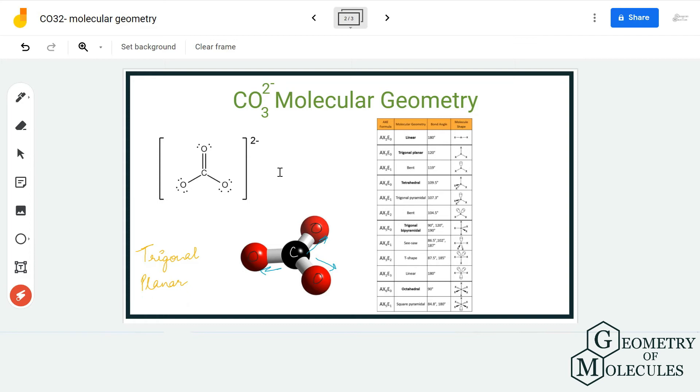To confirm it further, we are going to use the AXN notation to find out if we are on the right track. The AXN notation for this molecule would be AX3 because there is one central atom forming bonds with three oxygen atoms.